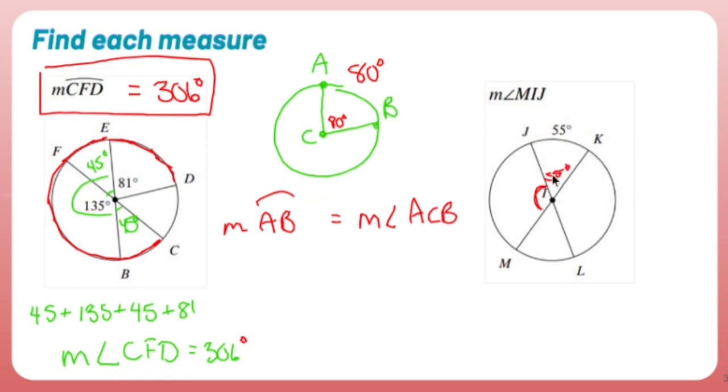So if you're 55 and this is a straight line, these guys add up to 180. So the measure of angle MIJ is 180 minus 55, which gives me 125 degrees. So I'll put that up here to keep things consistent. The measure of angle MIJ is 125 degrees.